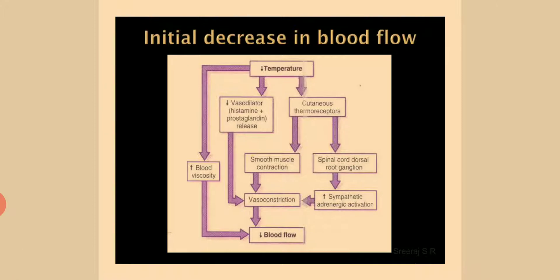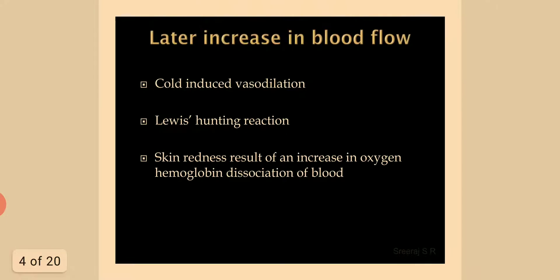With temperature decrease, vasodilation occurs along with histamine and prostaglandin release. Cutaneous thermoreceptors respond, causing an increase in blood viscosity, smooth muscle contraction, and activation via the spinal cord and dorsal root ganglion. Increased sympathetic adrenergic activation leads to vasoconstriction and decreased blood flow, followed later by cold-induced vasodilation — the Lewis hunting reaction — causing skin redness due to increased oxygen-hemoglobin dissociation.